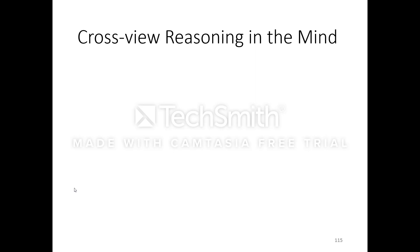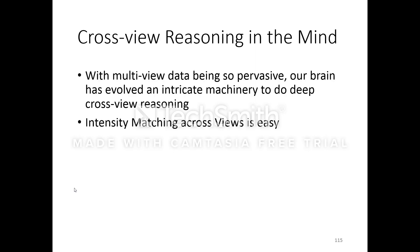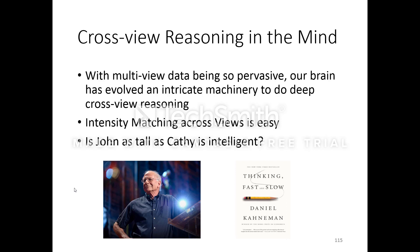The mind has evolved a very sophisticated machinery for cross-view reasoning, and intensity matching across views is particularly easy for the human mind. For example, you can ask: 'Is John as tall as Kathy is intelligent?' This is a perfectly meaningful question, and most humans would be able to reason about it and give an answer if they know the people in question.